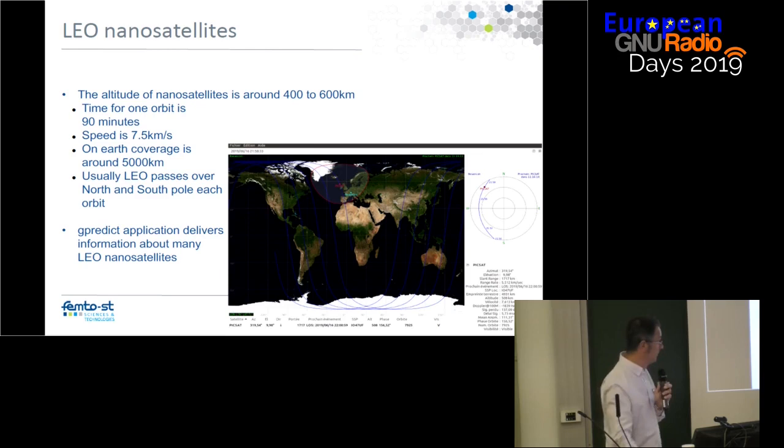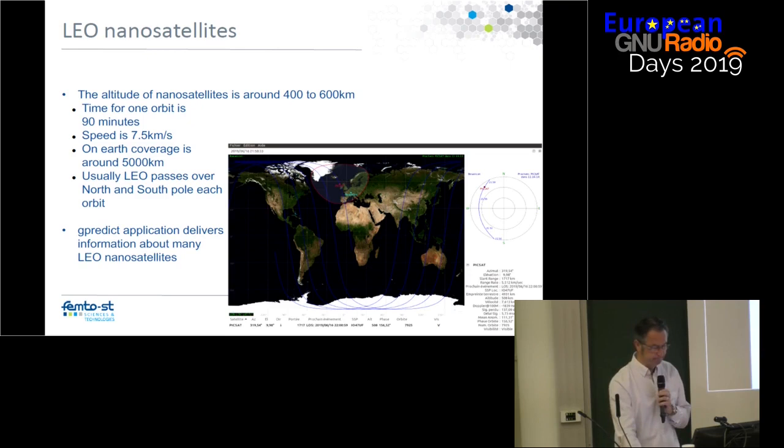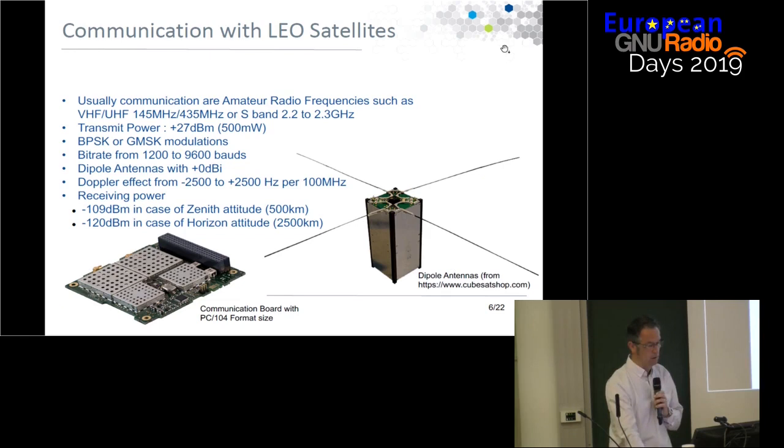This is a view of the J-Predict application, which delivers information about LEO satellites and their passes. On the map shown in red, you can see the coverage of the satellite.